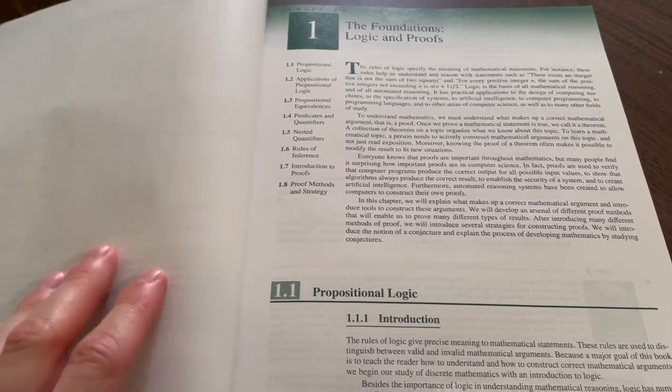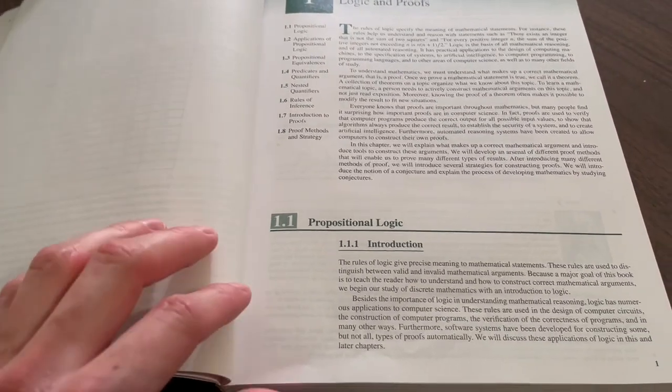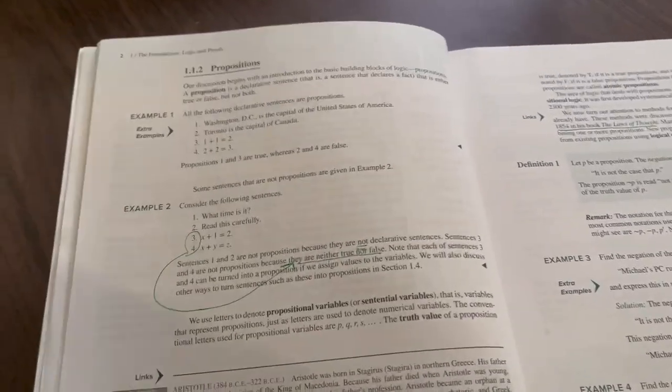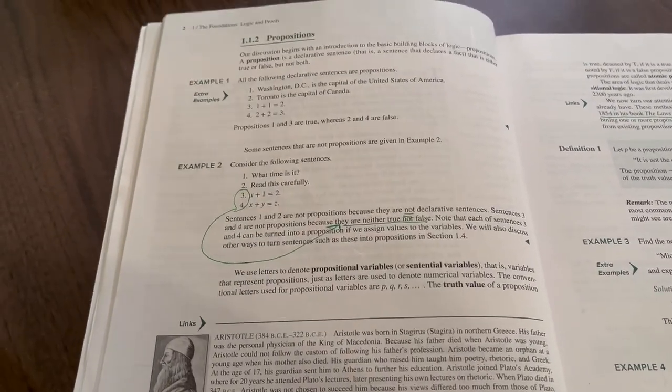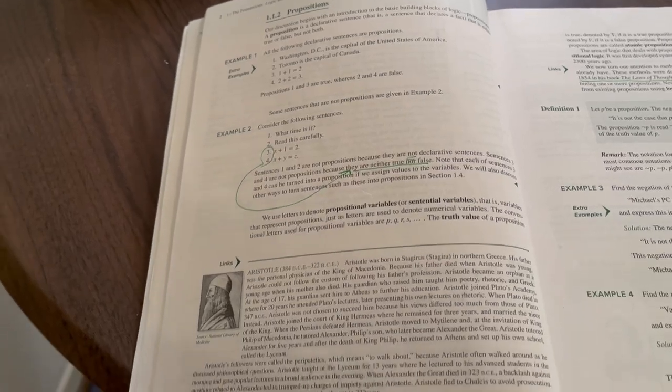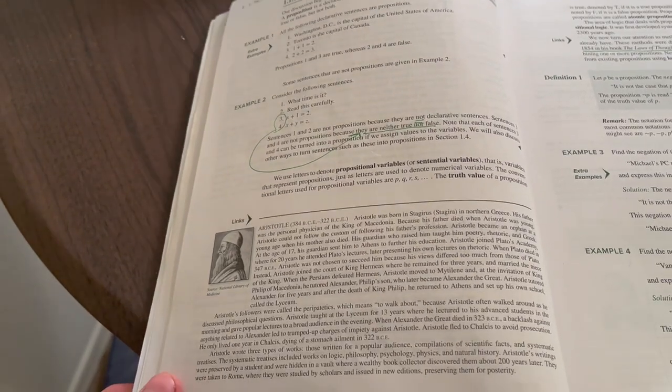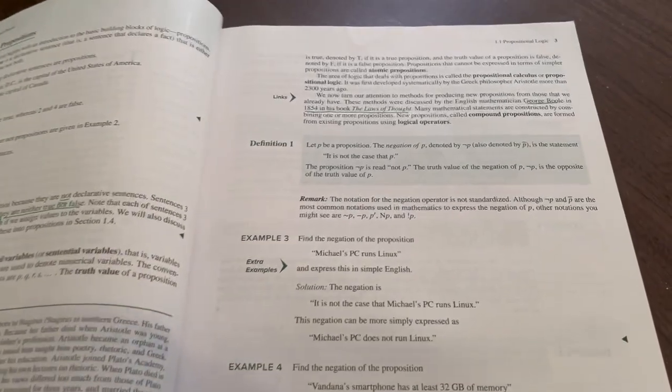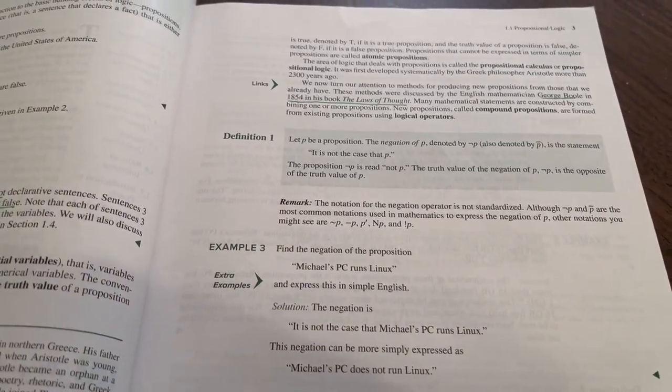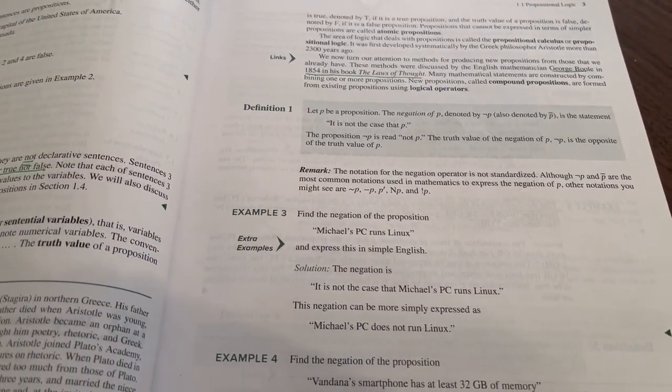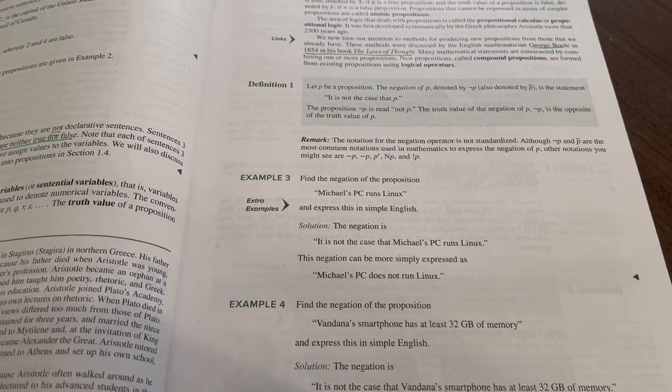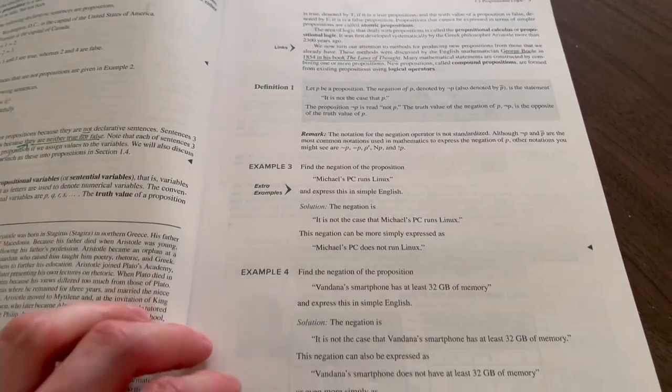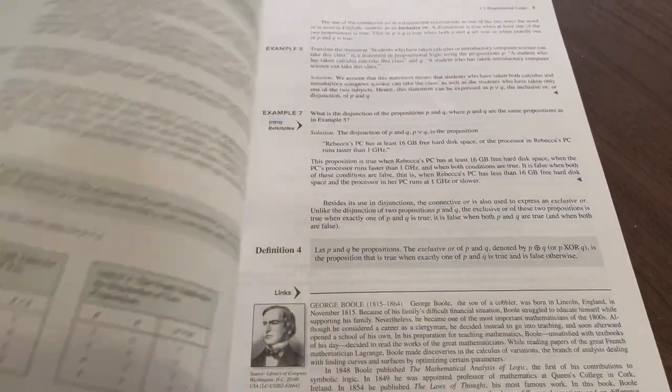So Section 1.1 is on propositional logic. We have an introduction. We get into what exactly is a proposition. So it declares something to be the case. There's a little sidebar on Aristotle, the first true logician. It talks about atomic propositions. And it introduces us to the negation of a proposition. How can we negate a given proposition? And how can we symbolize the two?